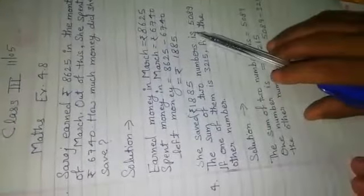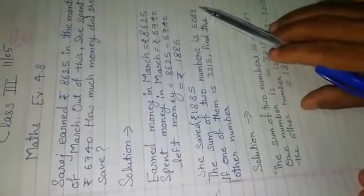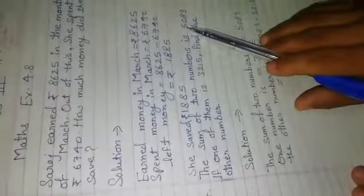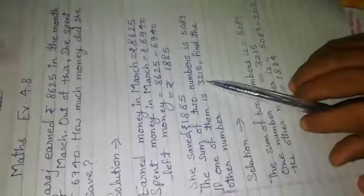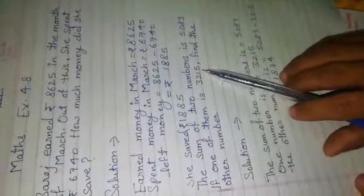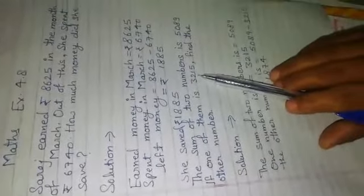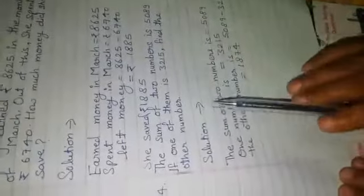Question number 4: the sum of two numbers is Rs. 5,089. If one of them is Rs. 3,215, find the other number.